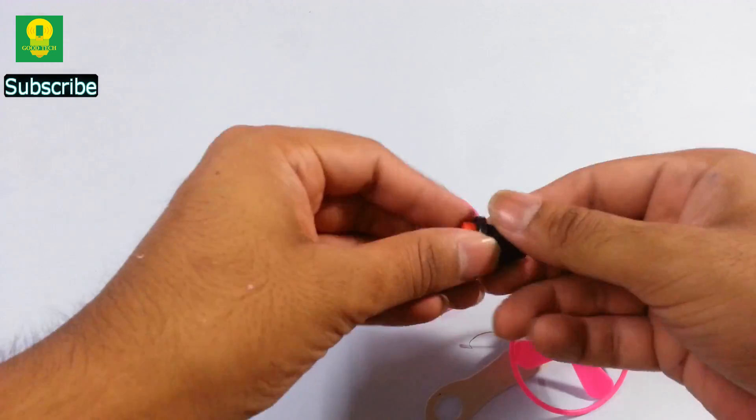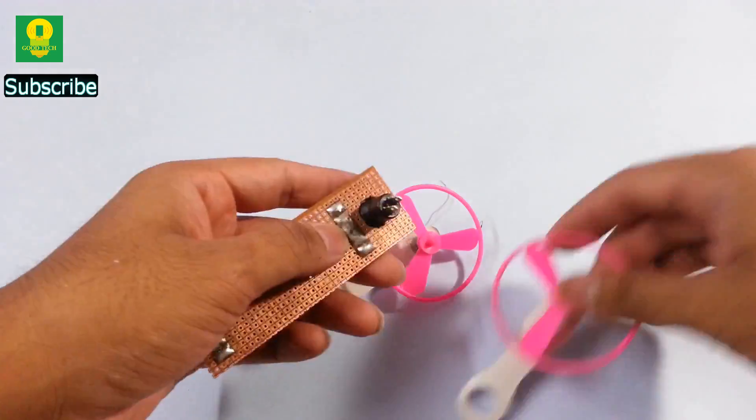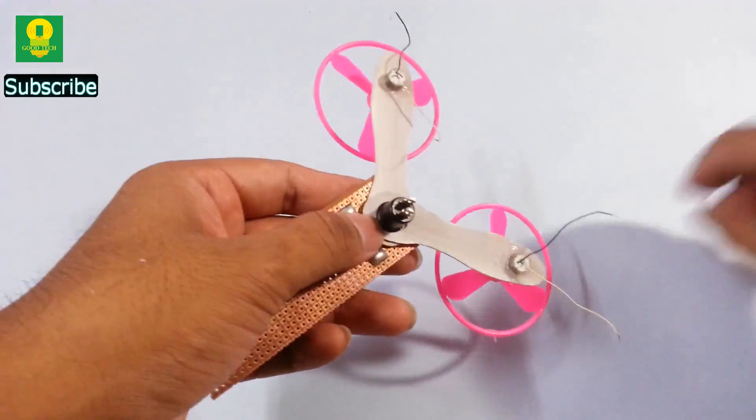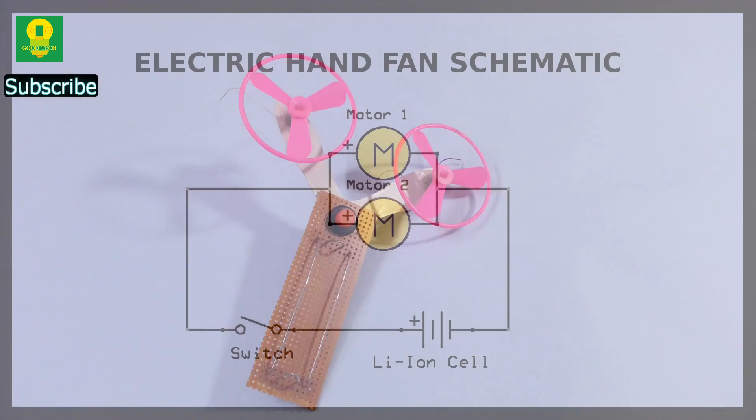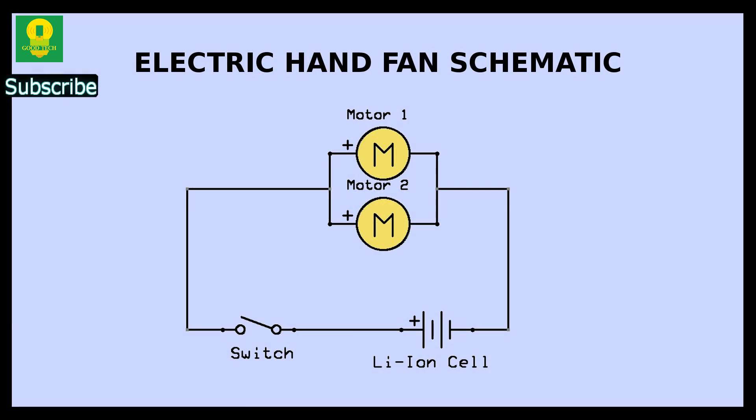Using the push to on switch, join all the pieces together. It is now time to connect the wires. Refer to the schematic and make connection between the cell holder, switch and the motors.